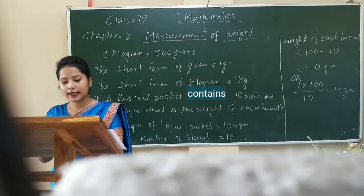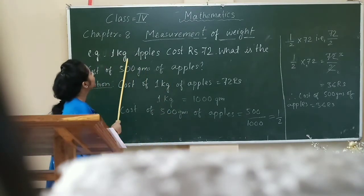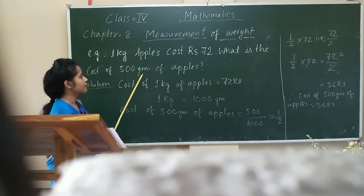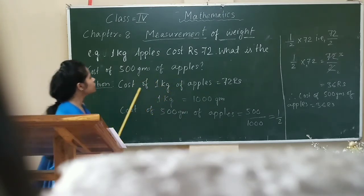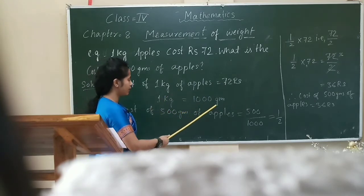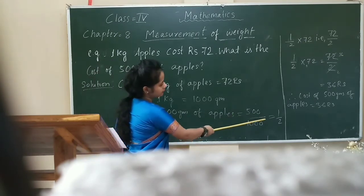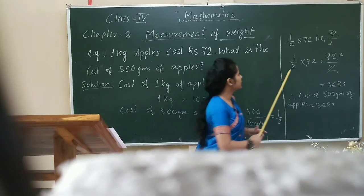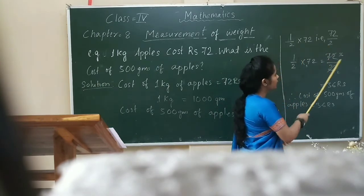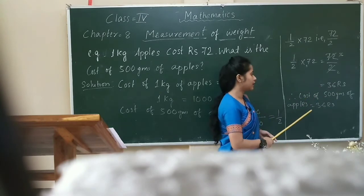Now let us see the division of weight by a quantity of weight. Here is the example: 1 kg of apples costs 72 rupees. What is the cost of 500 grams of apples? Here is the solution: cost of 1 kg of apples equals 72 rupees, and 1 kg equals 1000 grams. Cost of 500 grams equals 72 divided by 1000, that is 1/2. Dividing the amount: 1/2 of 72 equals 72 divided by 2, which gives 36. Therefore, the cost of 500 grams of apples equals 36 rupees.